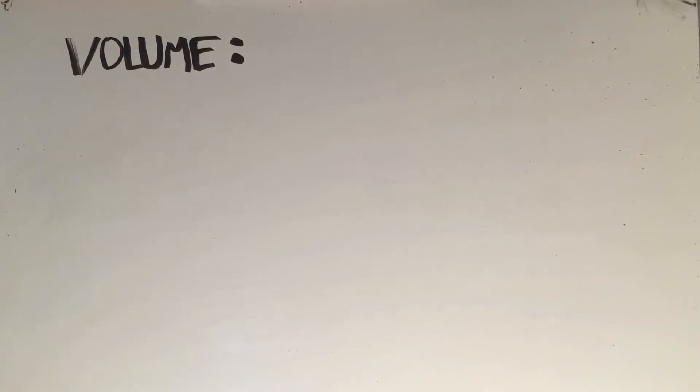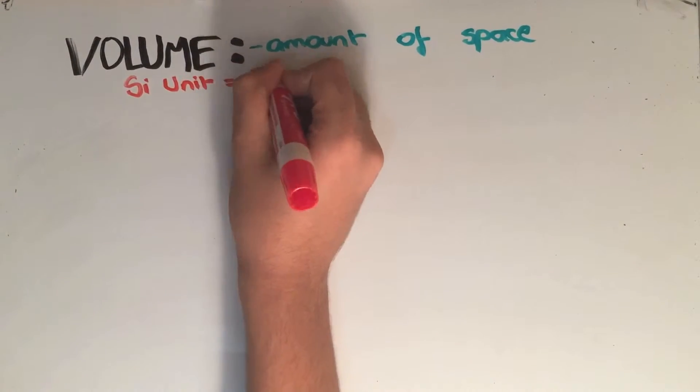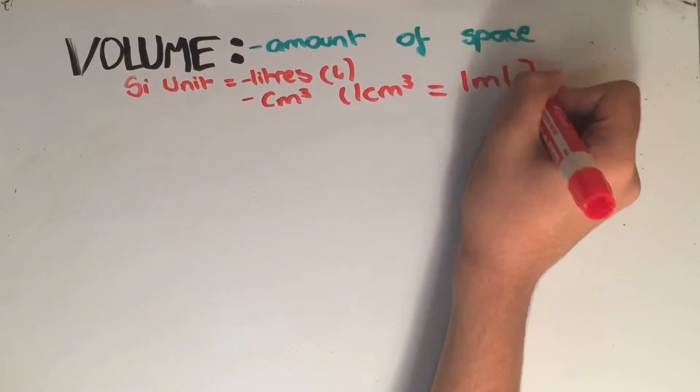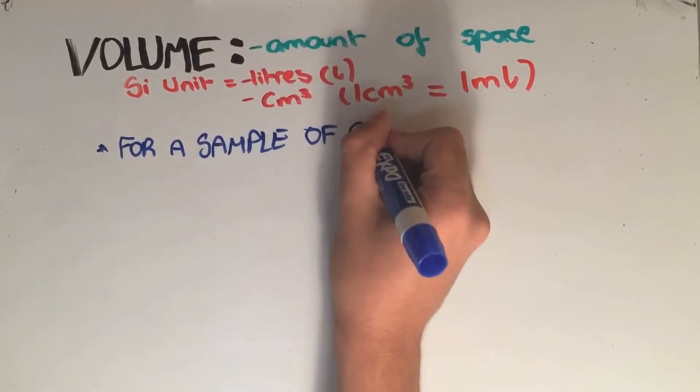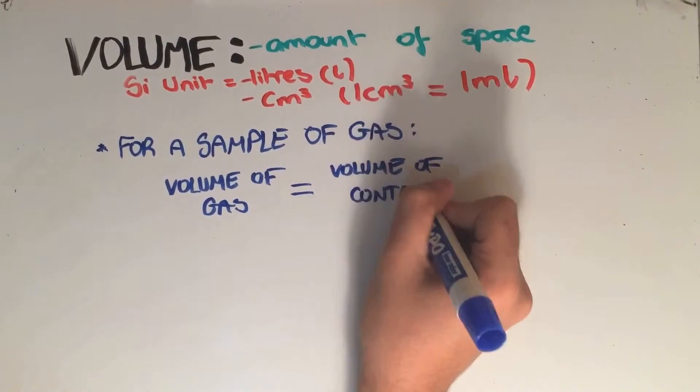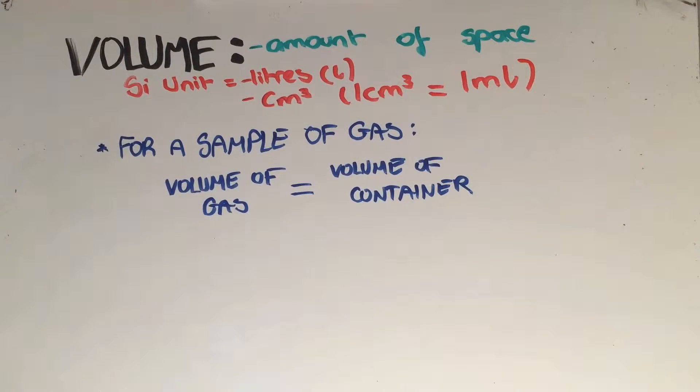The next quantity is volume, which is the amount of space an object takes. The units for volume are liters and centimeters cubed. One centimeter cubed is equal to a milliliter. Just a quick note you might want to be aware of: for a sample of gas, the volume of the gas is equal to the volume of the container, and the container is a solid.